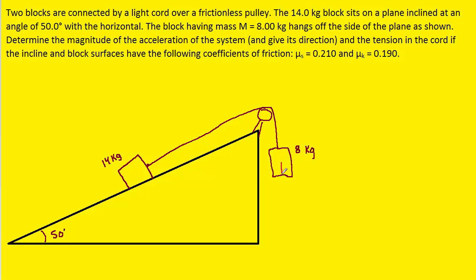For the 8-kilogram object, we have the gravitational force, which is equal to its mass times g, and then we have this upward tension force that's present in the rope that we can just call T.